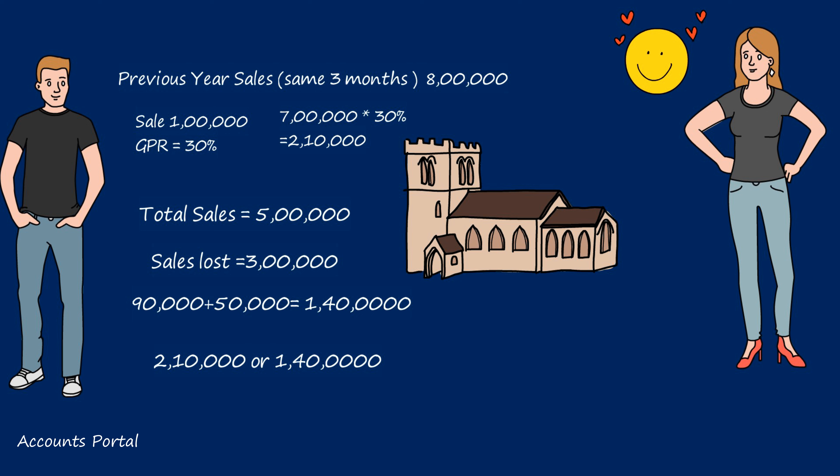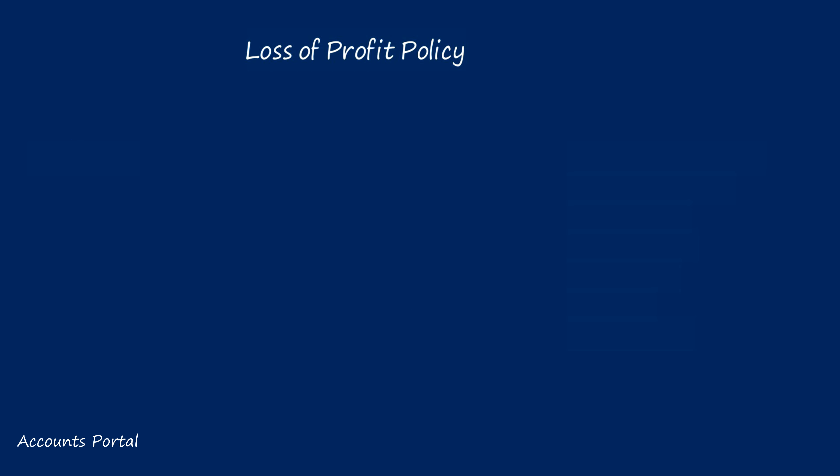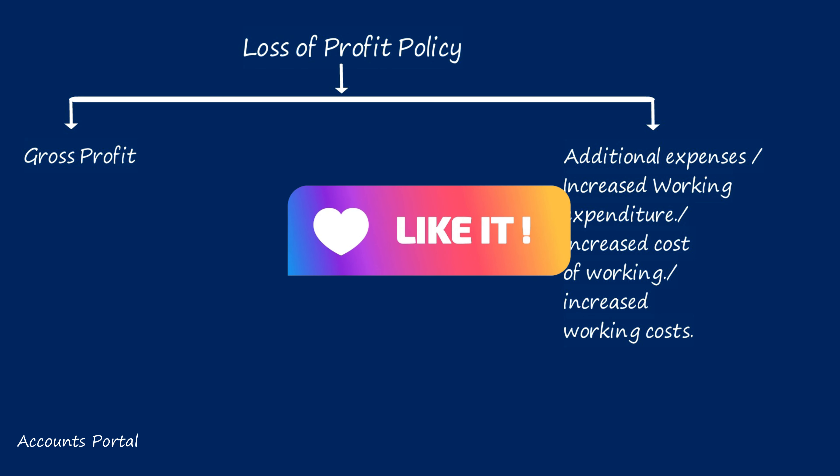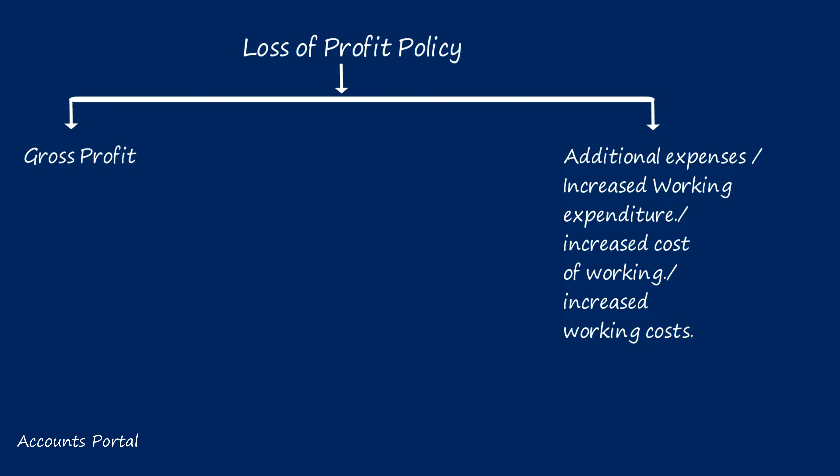In addition to gross profit, the policy compensates one extra item known as additional expenditure, increased working expenditure, increased cost of working, or increasing working costs. From the viewpoint of the businessman, he retains his regular customers. In the eyes of the insurance company, it reduces the claim amount. So in this policy there are two claims: claim for gross profit ratio on short sales, and claim for increased working expense or additional expenditure.